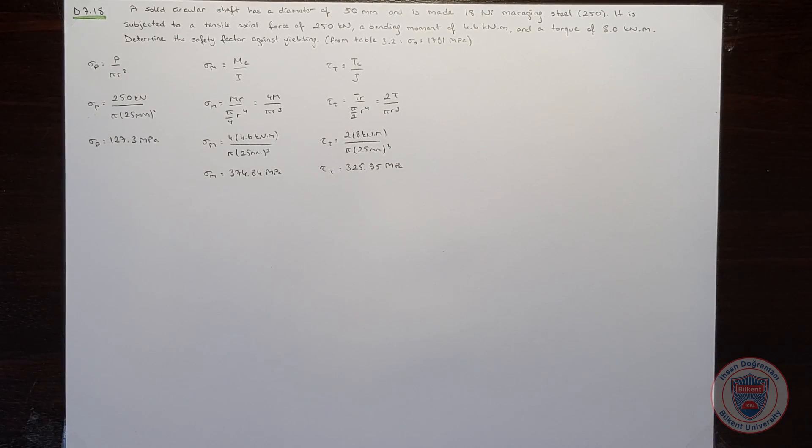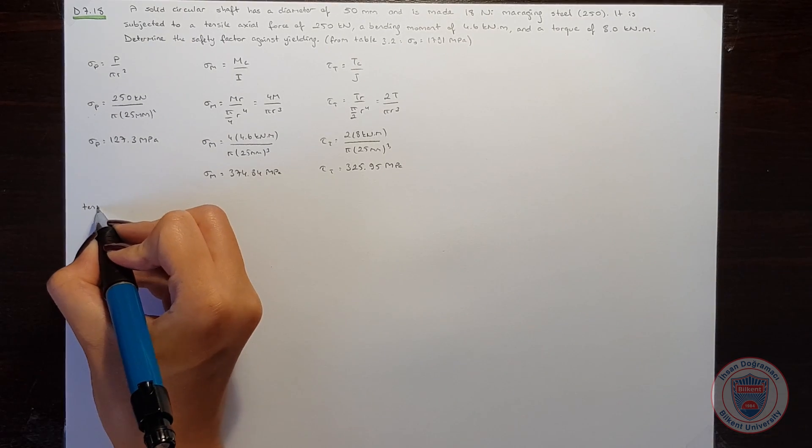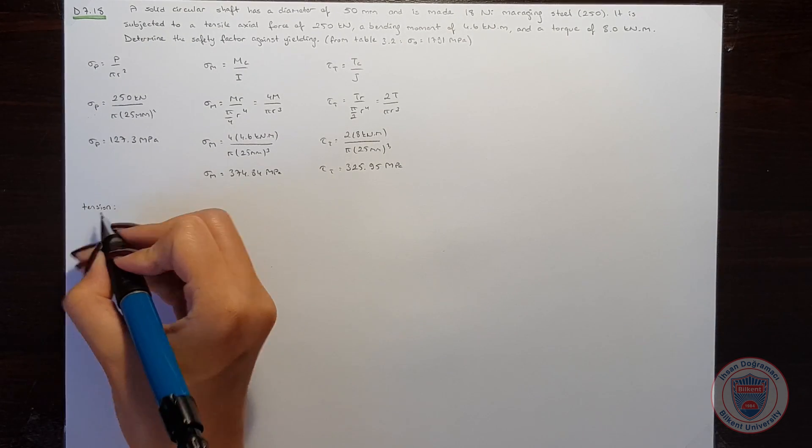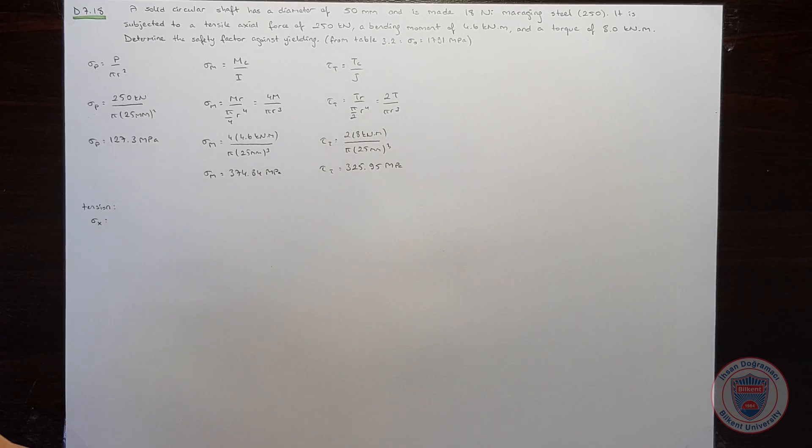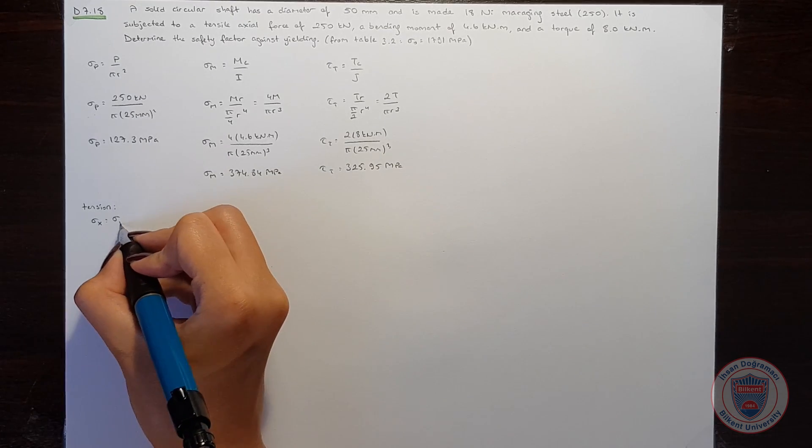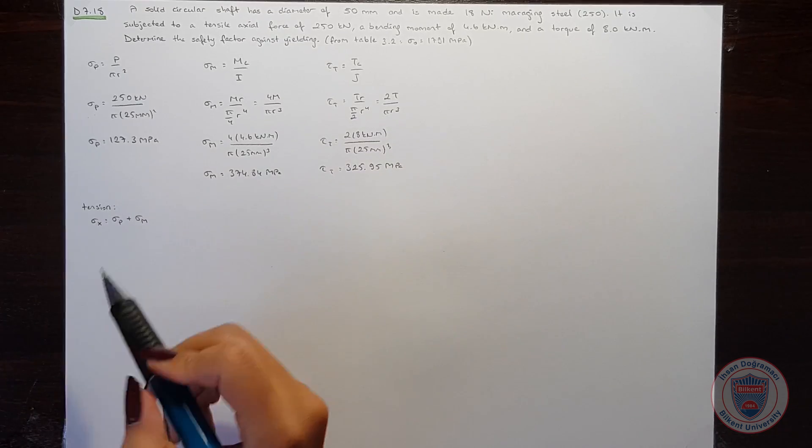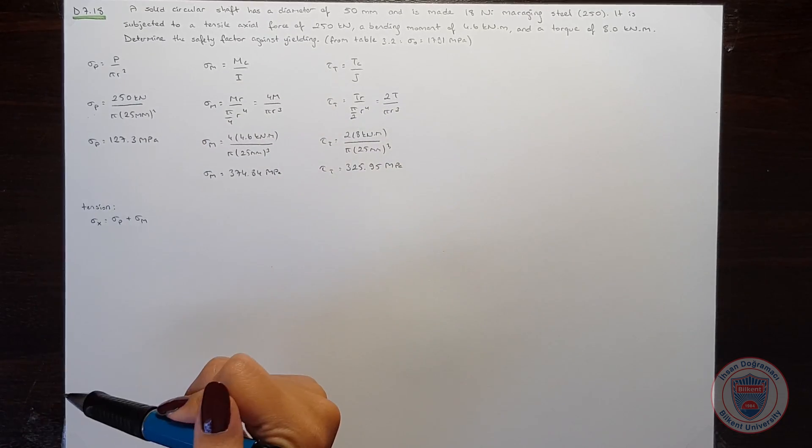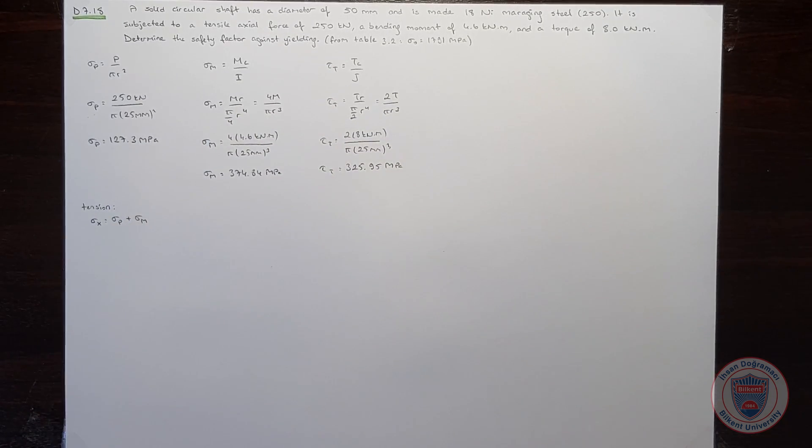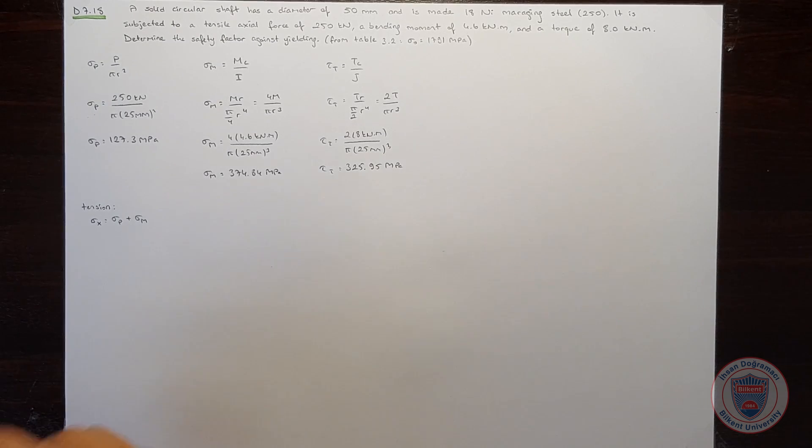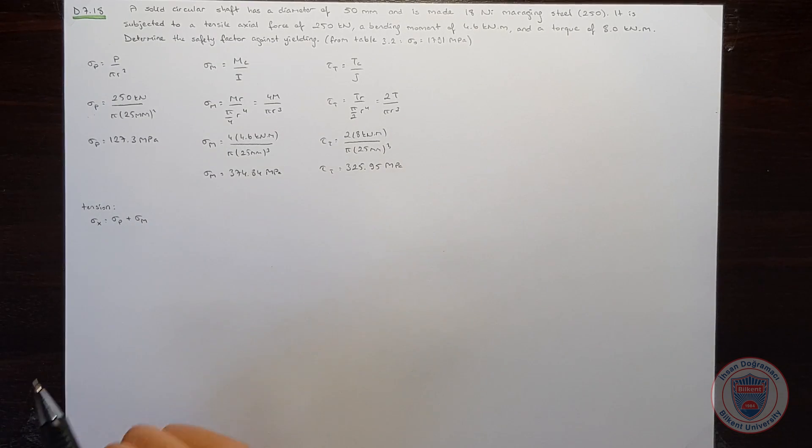Now we have two cases. One is tension and one is compression. In case of tension, sigma x will be equal to sigma p plus sigma m. We know that the first is tensile, so sigma p is already a tension stress. But we are assuming that sigma m is also tensile.